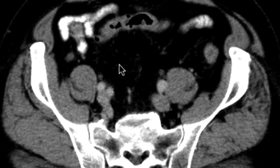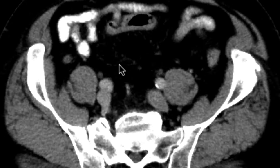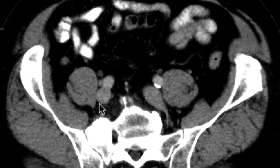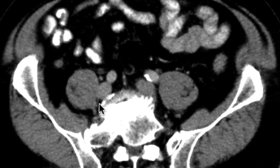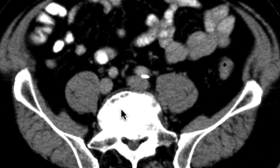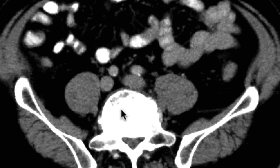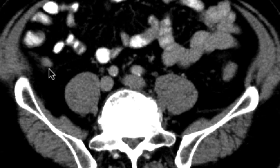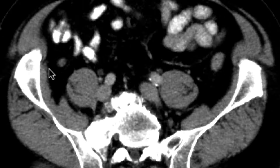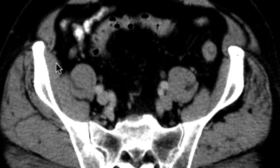As we go more proximal where it joins the cecum, you can start to see that internally, subtly, there may be an area of hyperdensity associated with it. And you can start to see it perhaps more conspicuously over here, where it looks quite hyperdense at that location versus a little bit more distally.